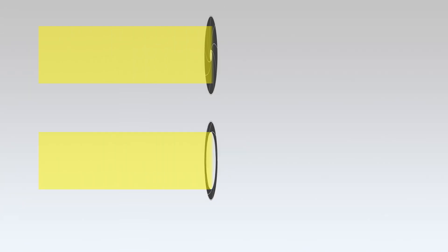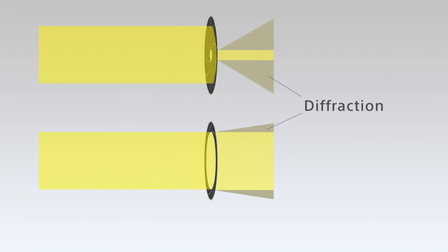This effect is caused by diffraction, a basic aspect of light theory. As the iris is closed, the light path is narrowed, which results in diffraction and an inevitable loss of resolution.